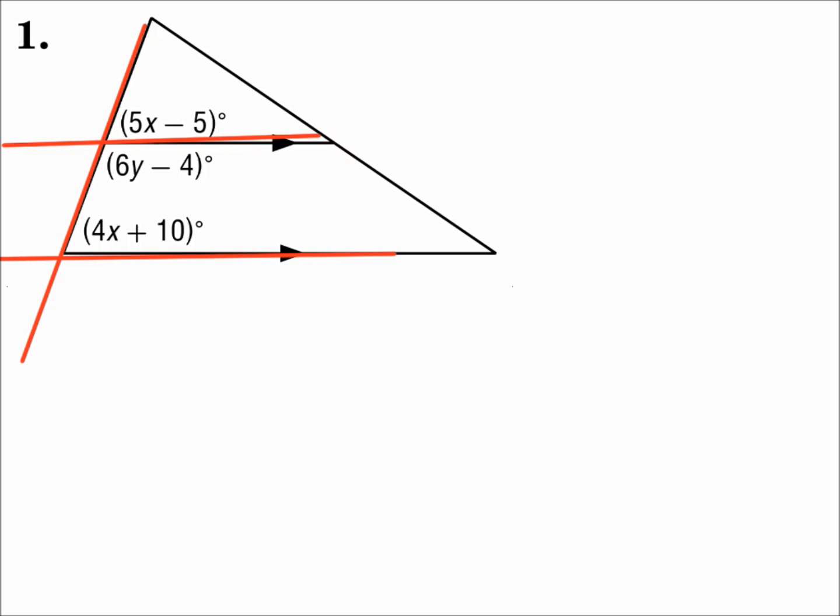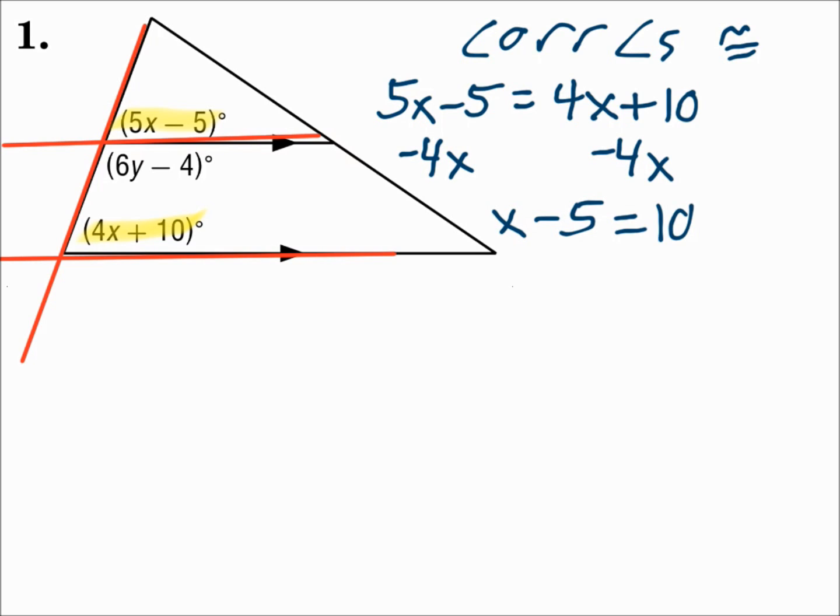We have two angles with x and one angle with y. Let's look at the x angles first. Those are both in the top right of each group, so they're corresponding angles, and they're congruent. So those measures will be equal to each other. 5x minus 5 equals 4x plus 10. We'll solve that for x. Subtract 4x from each side. x minus 5 equals 10. Add 5 to each side. And x is 15.